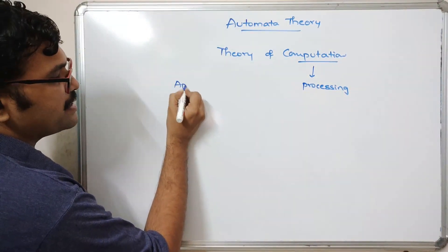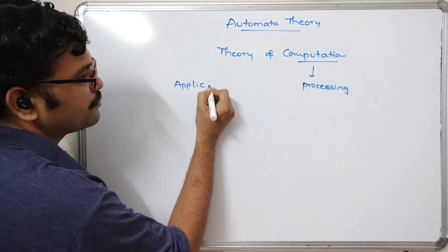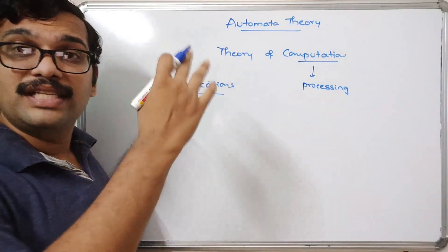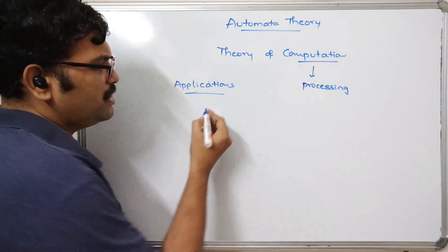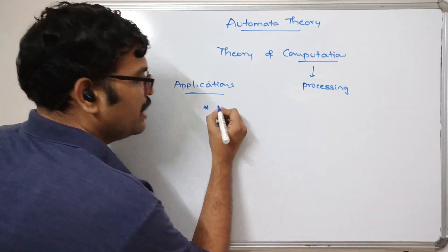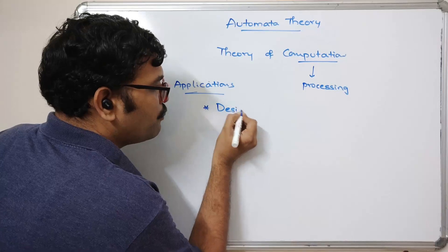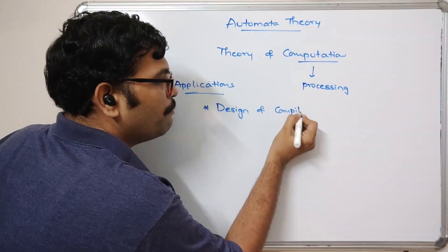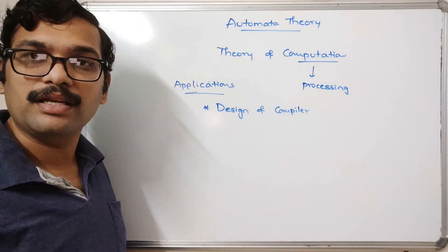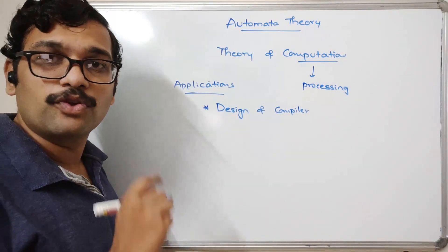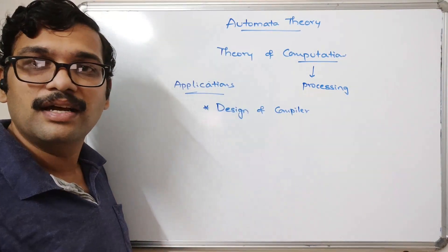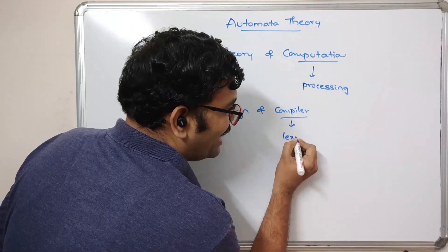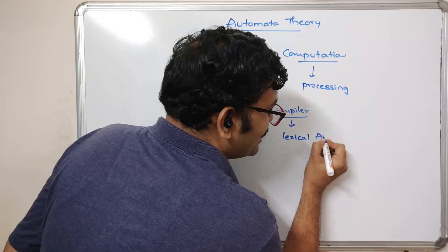Now, what are the applications? Where can we use this theory of computation? The first application is the design of a compiler. We use automata theory in designing compilers. The first phase of the compiler is called a lexical analyzer.